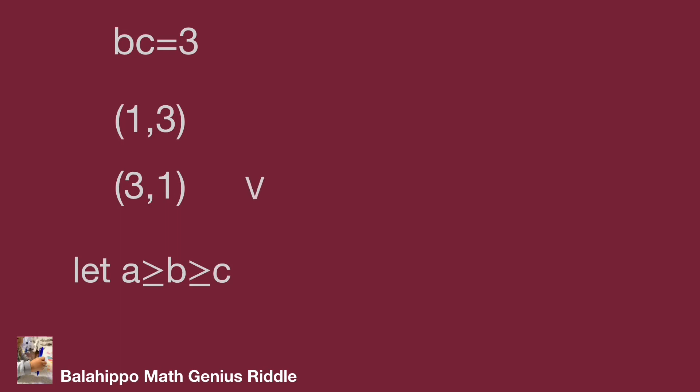Substitute B by 3 and C by 1 into the equation A plus B plus C equals ABC. We get A plus 3 plus 1 equals 3A, so A equals 2. This conflicts with the definition A greater than or equal to B, so this is also not the right number group.